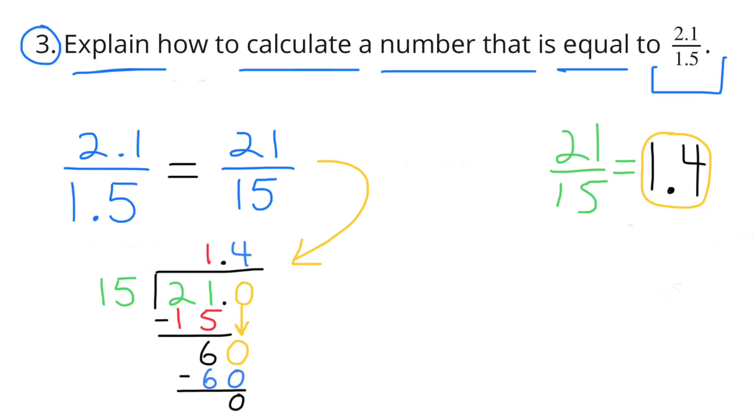Number 3. Explain how to calculate a number that is equal to 2 and 1 tenth over 1 and 5 tenths. 2 and 1 tenth over 1 and 5 tenths is the same as 21 over 15. I just made each of those values 10 times greater by multiplying both of them by 10. That helped me get rid of the decimal point, allowing me to deal with whole numbers instead of decimals.